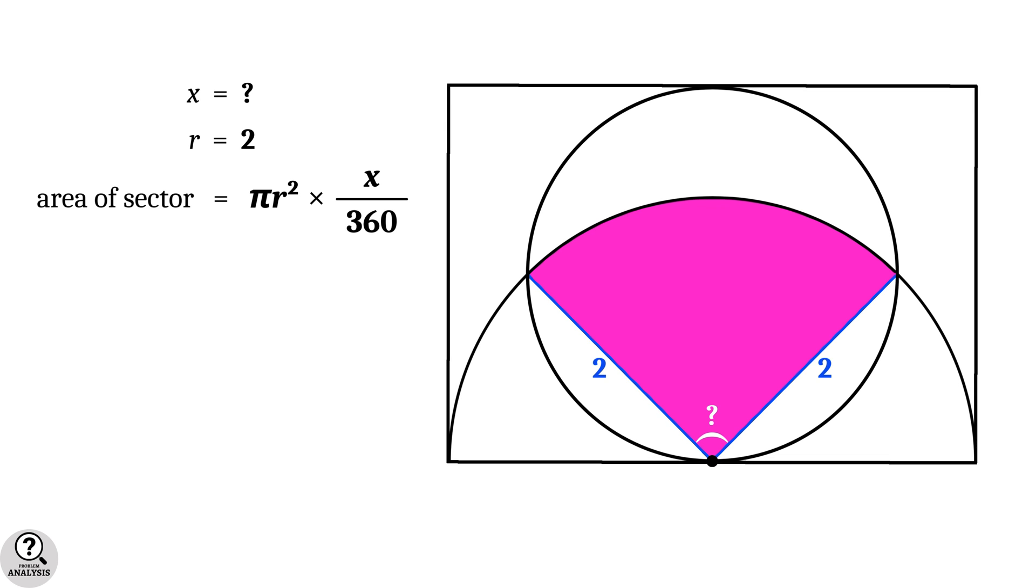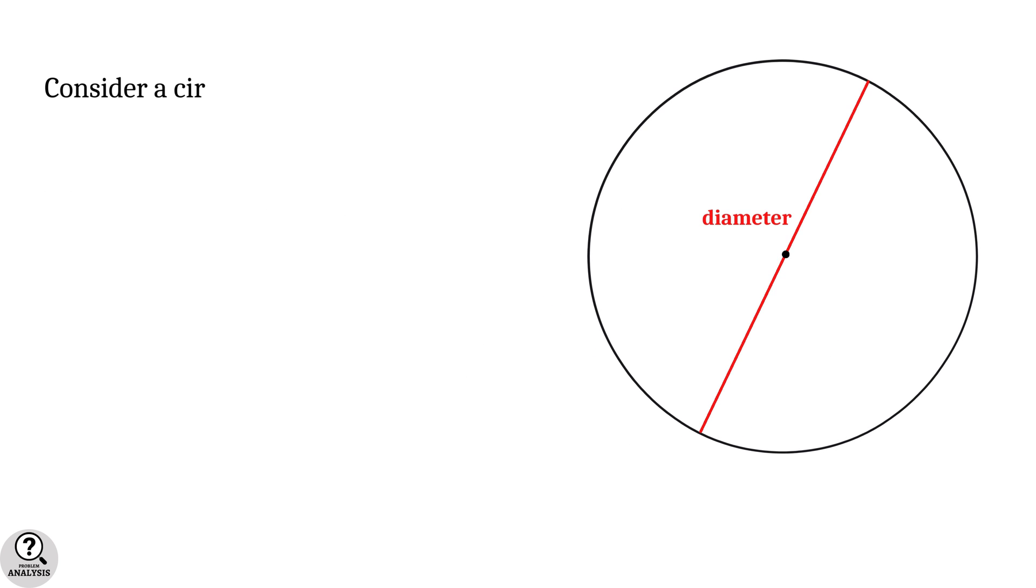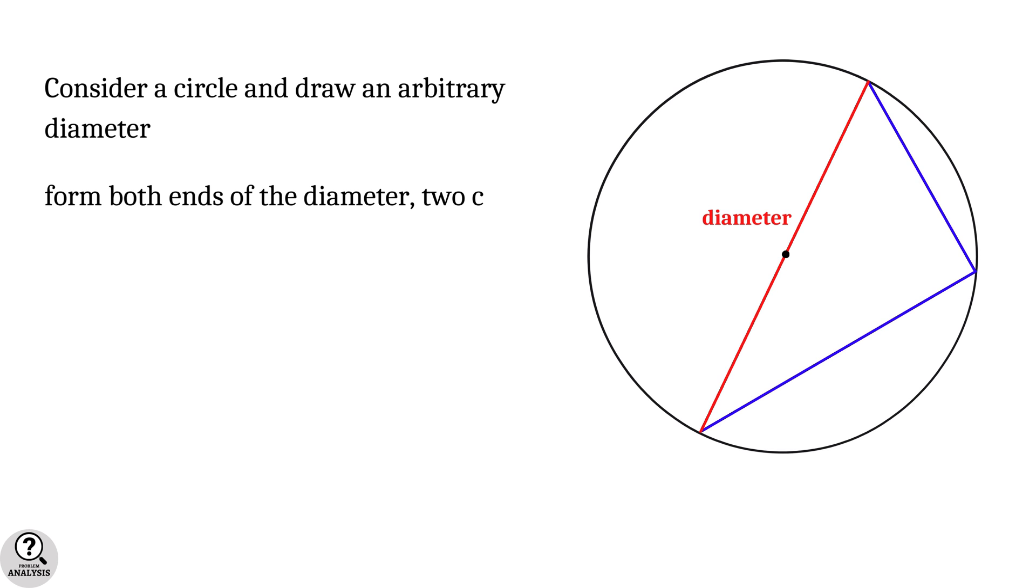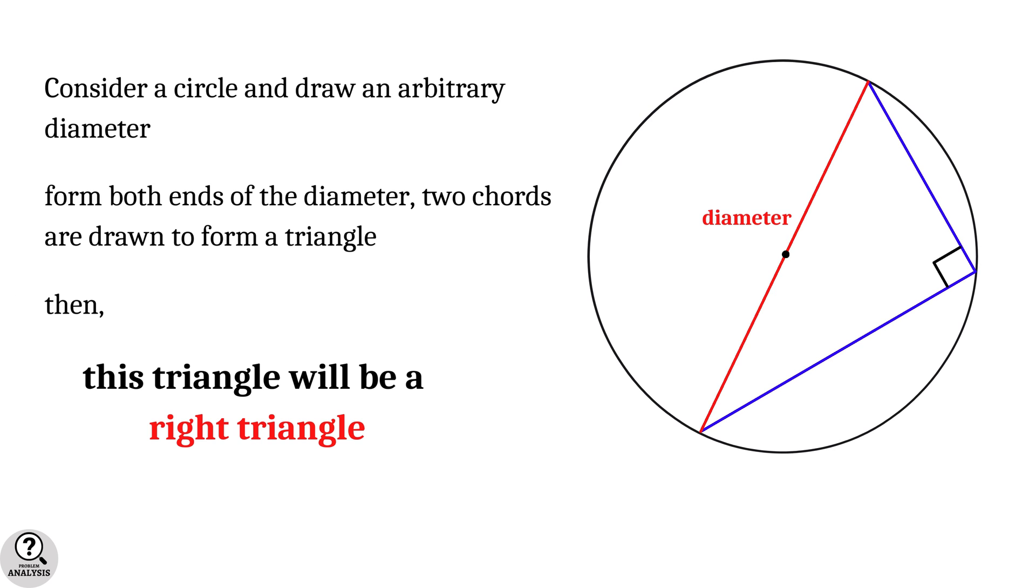Before that, we need to note an important property of circles. Consider a circle and draw an arbitrary diameter. From both ends of the diameter, two chords are drawn to form a triangle. Then the fact is, it will be a right triangle, or in another way, the angle made by these two chords will be 90 degrees.